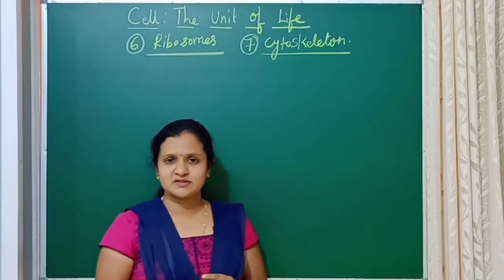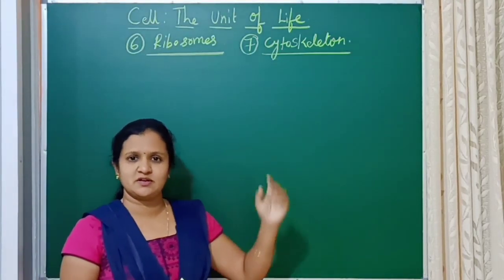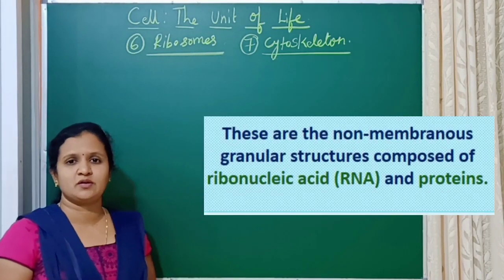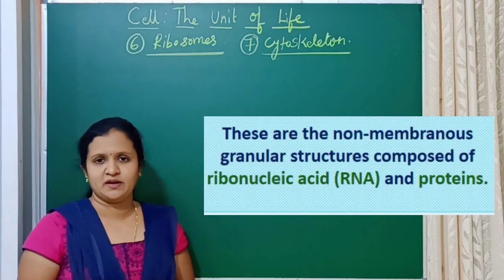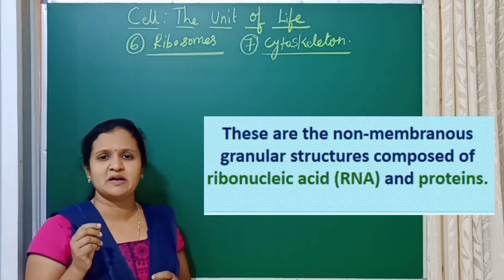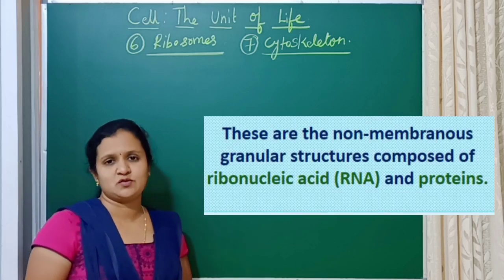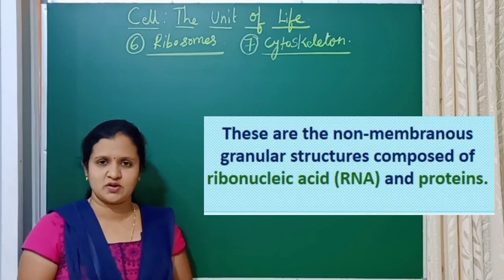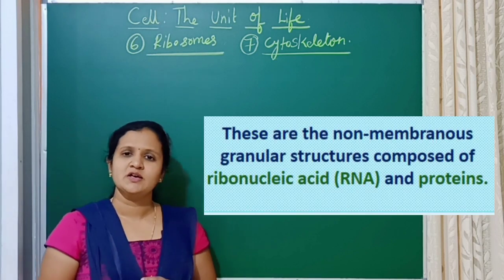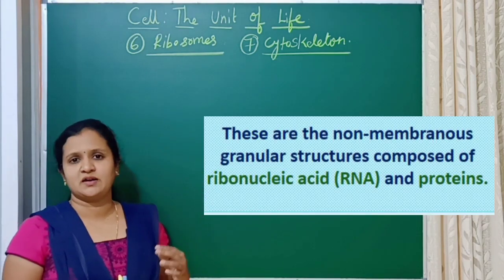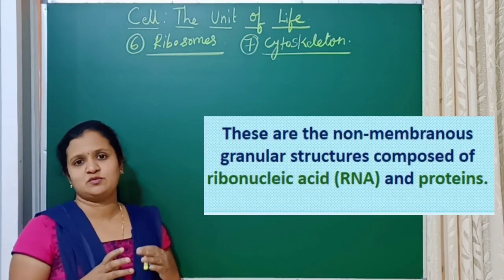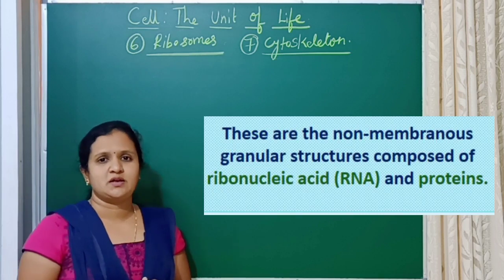Today we will discuss about ribosomes and cytoskeletons. Ribosomes are non-membrane bounded cell organelles, meaning they are not surrounded by any membrane. They are granular structures — they appear like grains or particle-like substances. They are found in the cytoplasm of both prokaryotes and eukaryotes. Ribosomes are mainly made up of RNA, that is ribonucleic acid, and proteins.